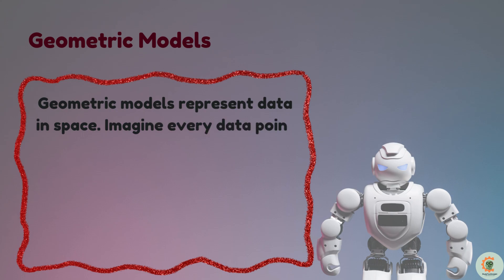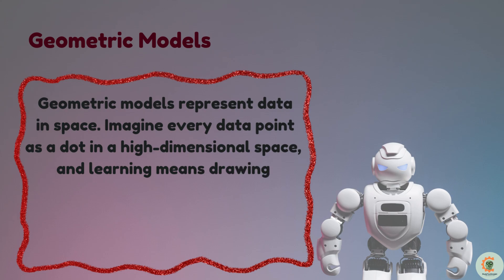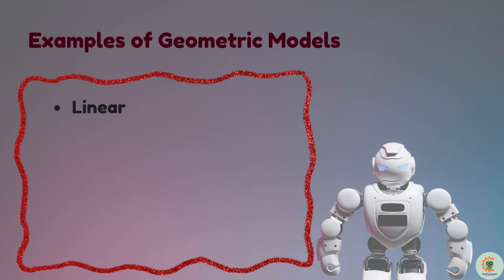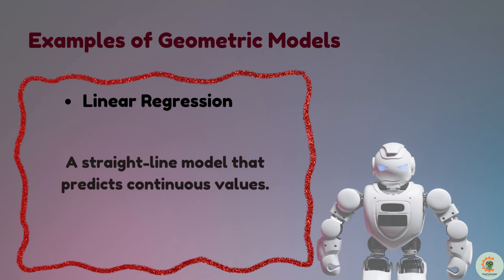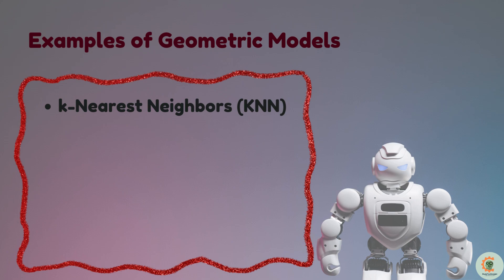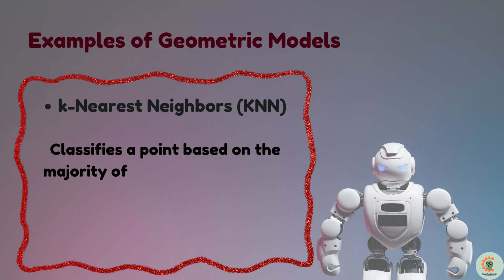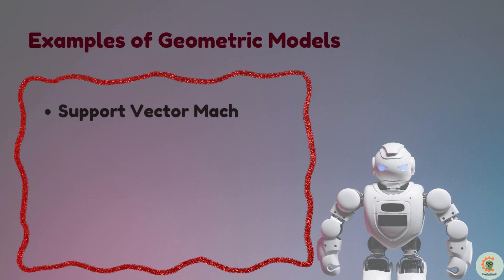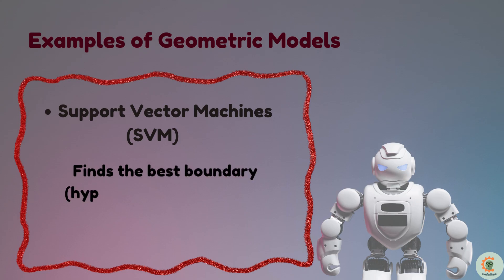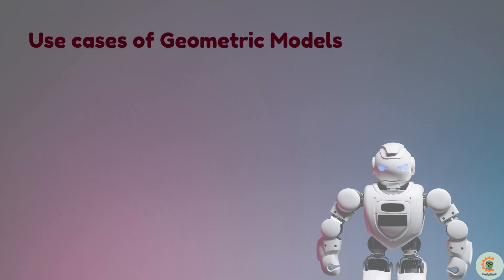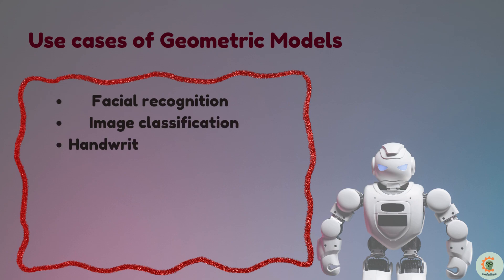Geometric models represent data in a space — imagine every data point as a dot in high-dimensional space. Learning means drawing boundaries between different categories. Examples include: linear regression, a straight-line model that predicts continuous values (e.g., predicting house prices based on size); K-Nearest Neighbors (KNN), which classifies a point based on the majority of its closest neighbors (e.g., handwriting recognition); and Support Vector Machines, which find the best boundary — a hyperplane — between two classes (e.g., email spam vs. non-spam). Use cases: face recognition, image classification, handwriting recognition.